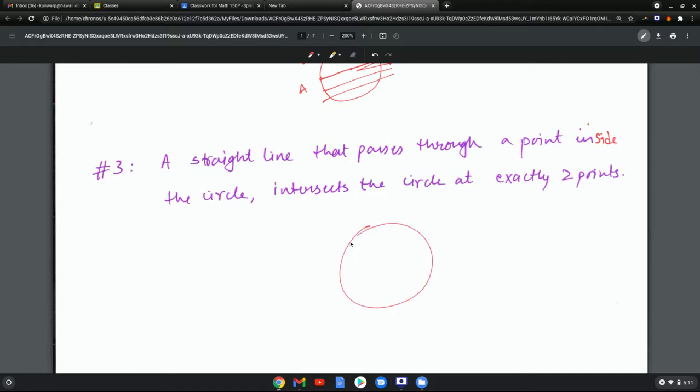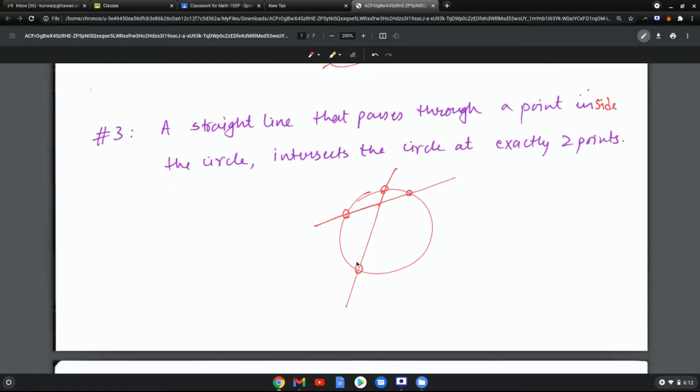A straight line that passes through a point inside the circle – so I take a circle, there's a point inside the circle, any line that I draw that goes through this point is going to meet the circle at exactly two points, meaning that is going to be a chord or a secant line.